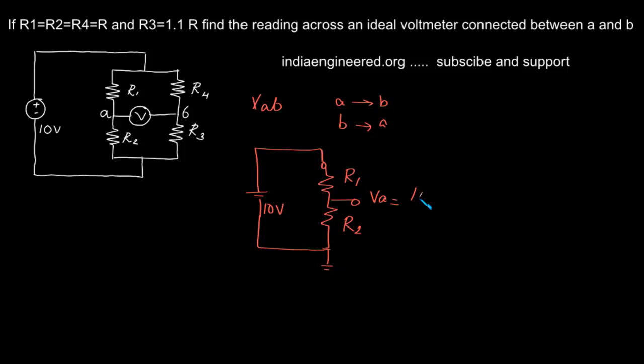How we get it is 10/(R1 + R2), that is 2R, times R2, that is R, which gives us 5 volts. So we have found out what is VA. Now similarly, we can find out what is VB.